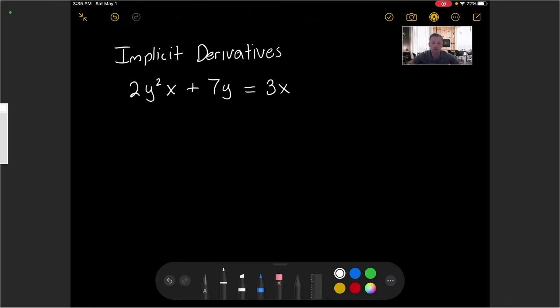Welcome. In this video we will take a look at another implicit derivative. We have the equation 2y²x + 7y = 3x.